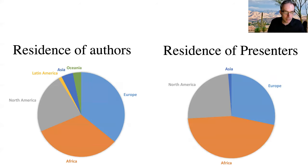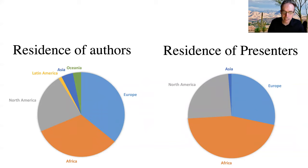Using the information on the residence of the authors, we created a pie chart of the geographical distribution of authors. It is remarkable that only one-fourth of the authors on African Commons have their residence in Africa itself. Most authors have residence in Europe or North America. One of the motivations for organizing this conference is to provide African scholars in Africa an opportunity to share their work.